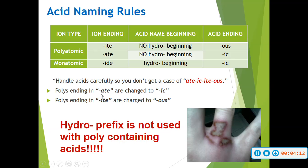If it ends in ATE, it's going to change to IC. If your polyatomic ends in ITE, then you're going to change it to OUS. And again, if you have a polyatomic, you are not going to use the prefix hydro in the front of your name.